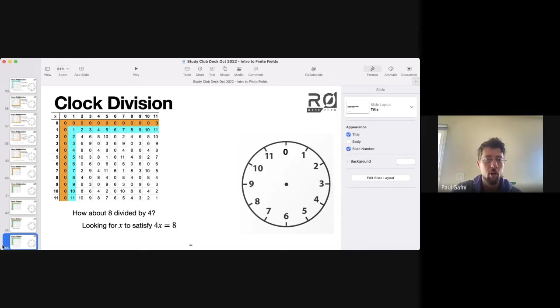What does that really mean when we ask 8 divided by 4? We're looking for a number that satisfies this equation. And you can look through the table and you can find here's an example of a location that satisfies this division question. 4 times 2 certainly still equals 8 on this clock.